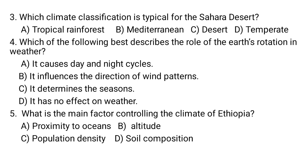A. It causes day and night cycles. B. It influences the direction of wind patterns. C. It determines the seasons. D. It has no effect on weather. Question number five: What is the main factor controlling the climate of Ethiopia? A. Proximity to oceans. B. Altitude. C. Population density. D. Soil composition.